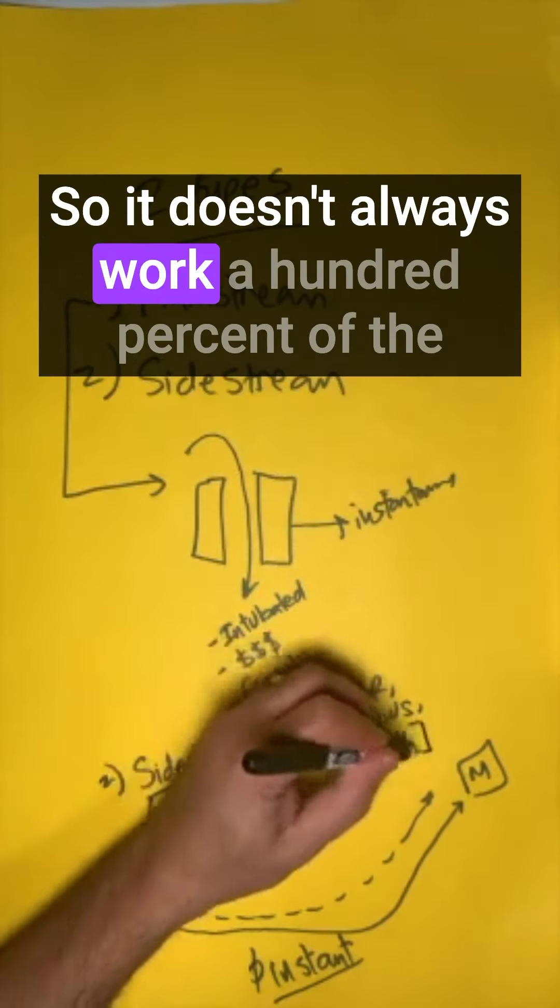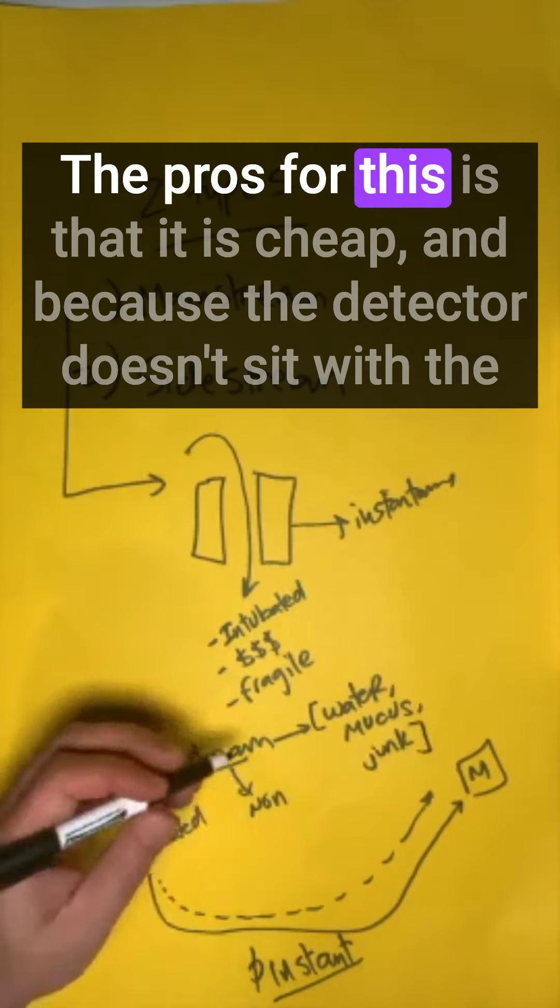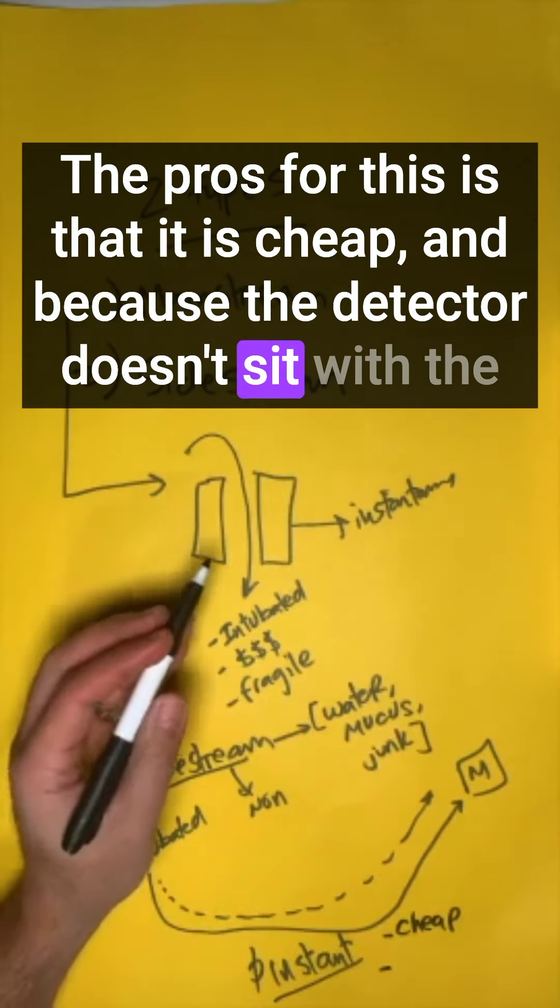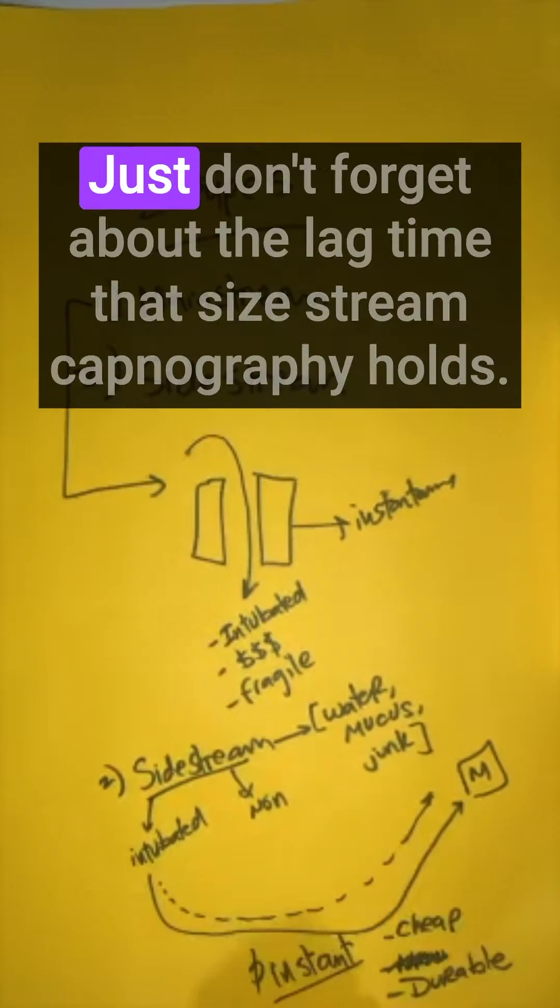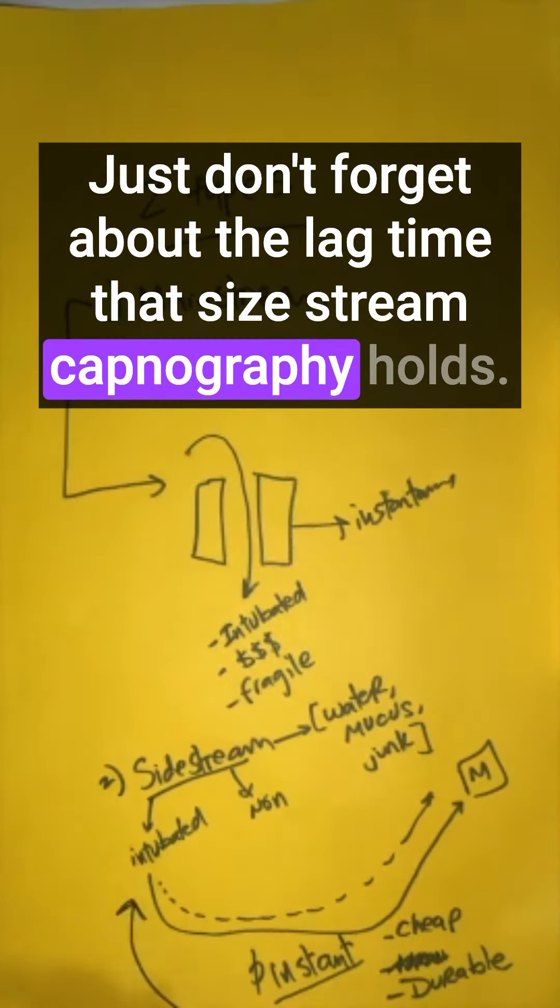It doesn't always work 100% of the time and you may have to change out your tubing. The pros are that it is cheap, and because the detector doesn't sit with the endotracheal tube and monitor, these are durable. Just don't forget about the lag time that sidestream capnography holds.